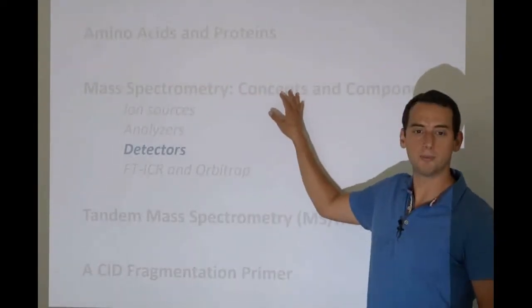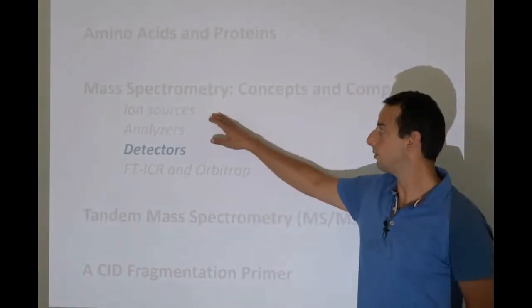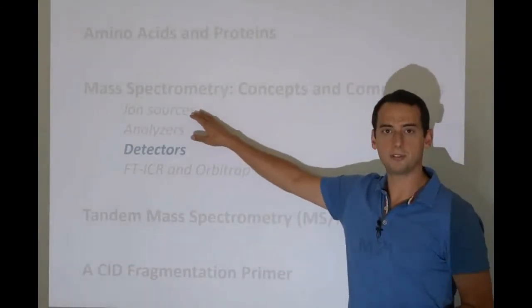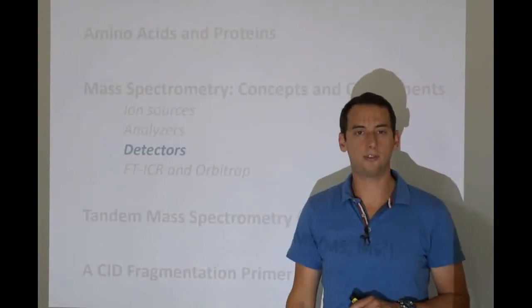We talked about the general concept of a mass spectrometer, how it was built, that was the second lecture. We talked about ion sources, that was still the subject of the second lecture. We had electrospray and matrix assisted laser desorption ionization.